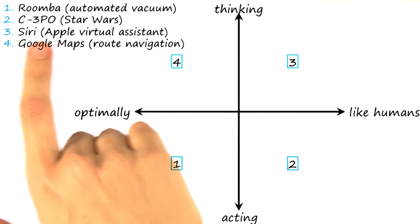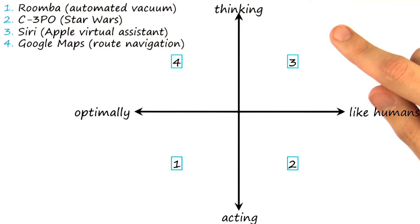Apple's virtual assistant Siri doesn't act in the world, so she's more on the thinking end of the spectrum. But like C-3PO, she has to interact with humans. She has to read human sentences and put her own responses back into normal vernacular. So we're going to say that she thinks like humans.